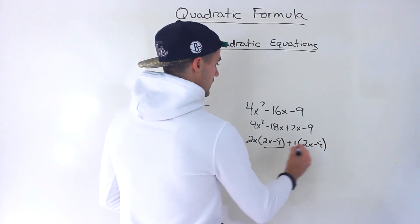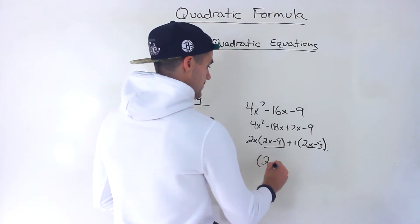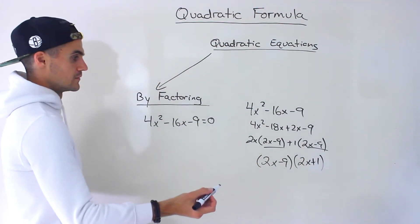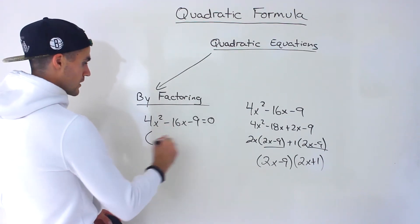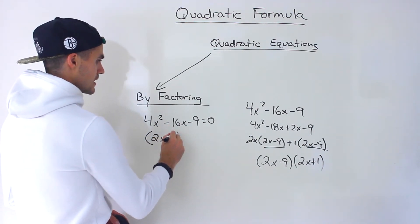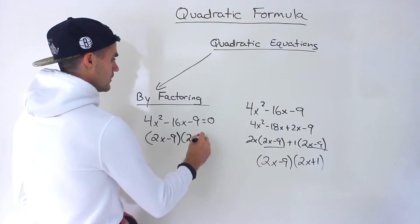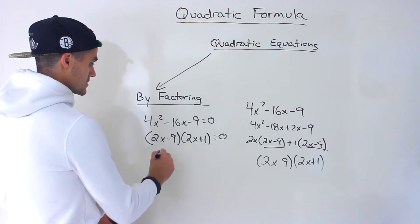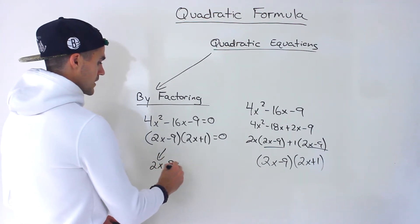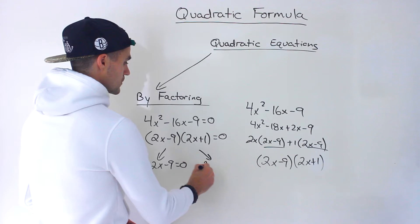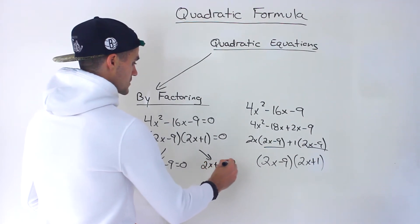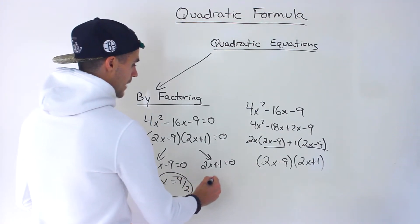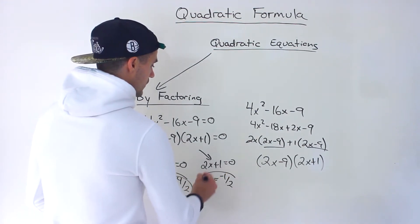From the first two terms we could take out a positive 2x, leaving us with 2x minus 9, and from the last two terms we take out a positive 1, also leaving 2x minus 9. Then we factor out 2x minus 9, and we're left with 2x plus 1. So this quadratic factors into (2x minus 9)(2x plus 1) equals 0, giving x equals 9/2 or x equals negative 1/2.